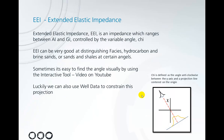Extended Elastic Impedance is an impedance which ranges between AI and GI, and it's controlled by an angle called chi. As you can see in the diagram here in the bottom right, chi is defined as an angle at which the two axes are projected, going anti-clockwise from the origin. Extended Elastic Impedance is very good at distinguishing different types of facies, including hydrocarbon and brine sands, and shales.